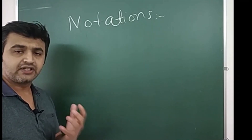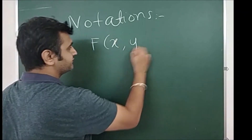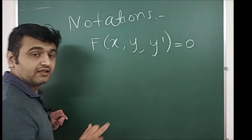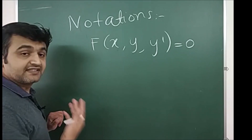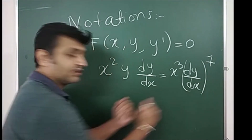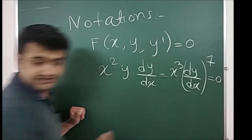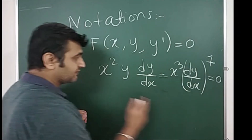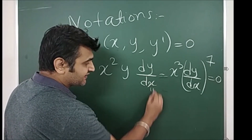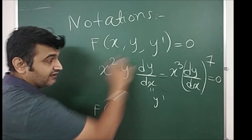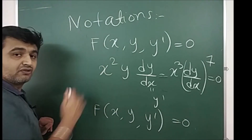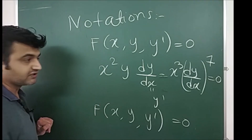Whenever you start studying ordinary differential equations, the first notation you come across is F(x, y, y') = 0. This means you have a function in x, y, and y' and it is an equation — a first order differential equation. For example, if you bring terms to the left hand side, what you get is a function in x, y, and dy/dx, set equal to zero.